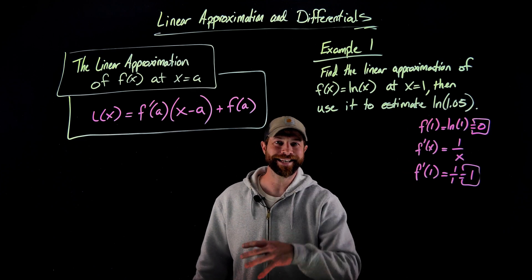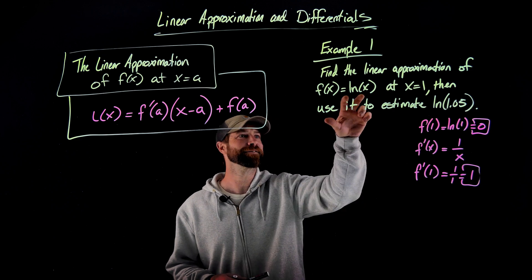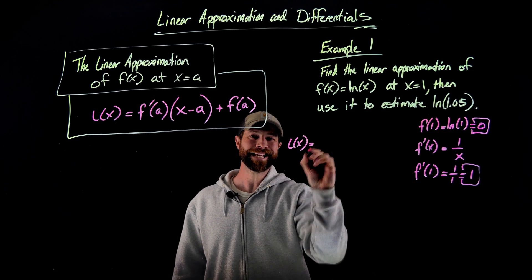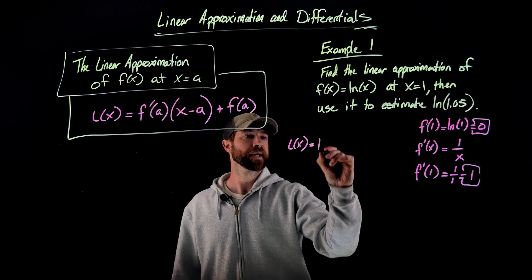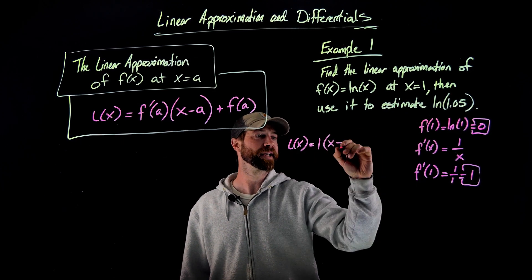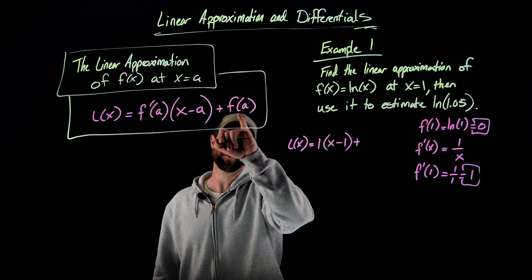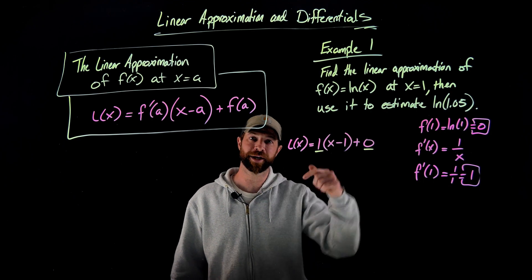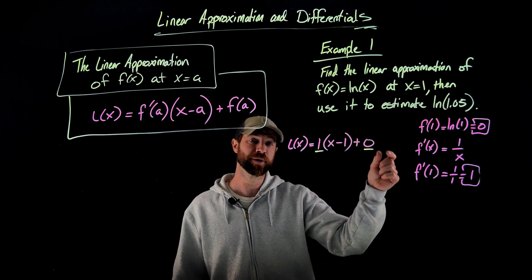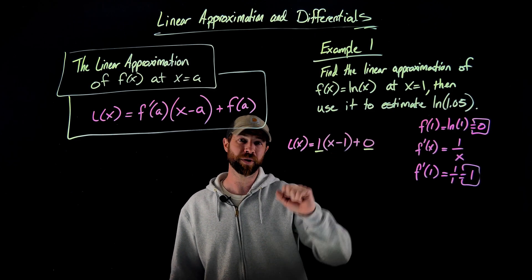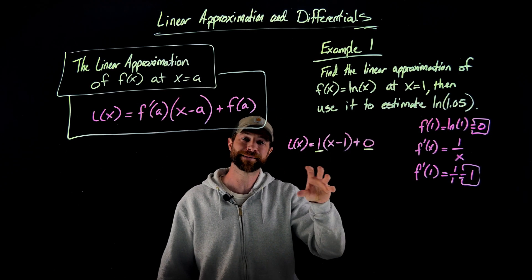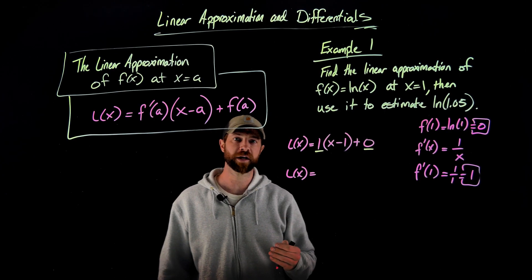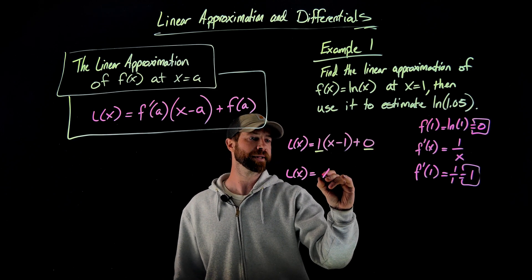Now we can find the linear approximation — the equation of the tangent line of natural log of x at x equals 1 — following the formula. L of x equals f prime of a, which is 1, times x minus a, where a is 1, plus f of 1, which is 0. The 1 comes from f prime of 1, the 0 from the original function value, and x minus 1 because we're approximating around x equals 1. So the linear approximation equals simply x minus 1.